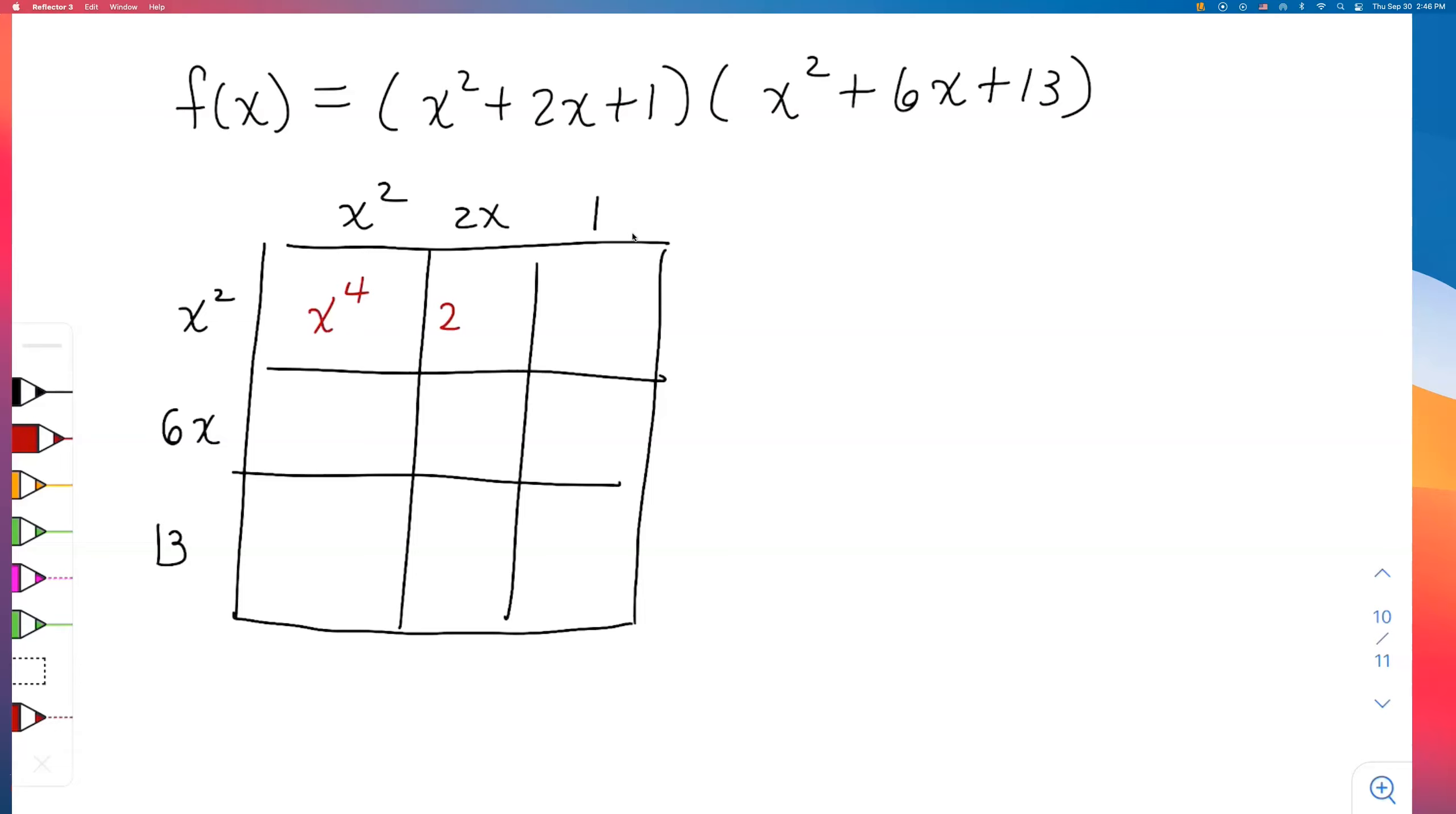x² times x² is x to the fourth power. Next, I will get 2x to the third power because the exponents, if I add 2 plus 1, I will get 3. Last one on the first row, it's just x². Second row: 6x to the third power, 12x², and 6x. I'm just doing this part a little bit quicker because I showed you how to do this box method in the previous one. 13x², 26x, and then lastly 13.